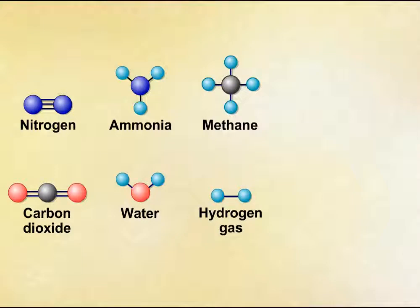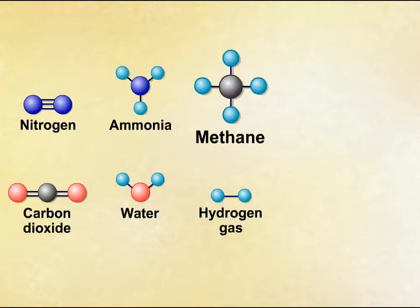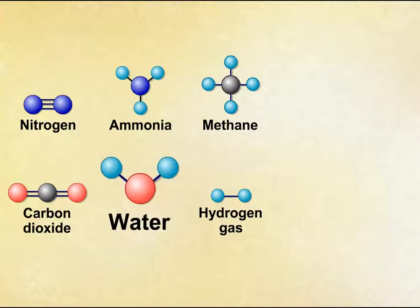In the 1920s, Oparin and Haldane hypothesized that the atmosphere of the primitive Earth contained gases such as nitrogen, ammonia, methane, carbon dioxide, water vapor, and hydrogen.